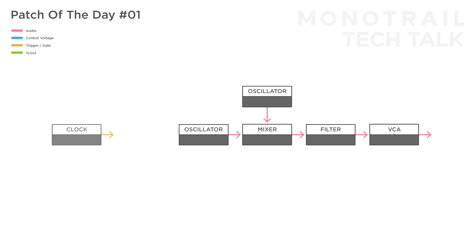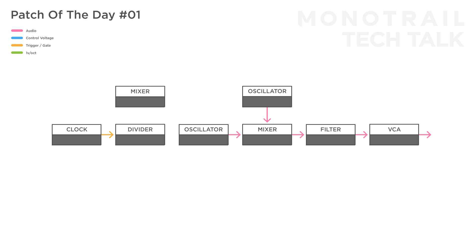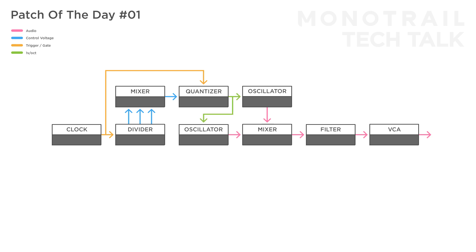A square wave LFO is used as the master clock and sent to a clock divider. To create melodies, a mixer is used to mix a combination of multiple clock divisions. The mix of gates is sent to a quantizer, which is synced with a copy of the master clock. The created 1V per octave signal is used to tune both oscillators.